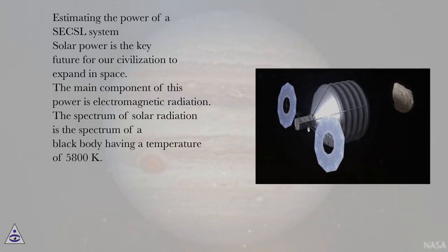Estimating the power of a SECSL system. Solar power is the key future for our civilization to expand in space. The main component of this power is electromagnetic radiation. The spectrum of solar radiation is the spectrum of a blackbody having a temperature of 5800 Kelvin.